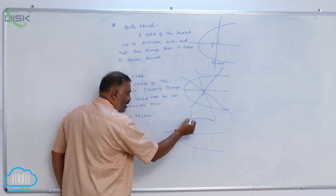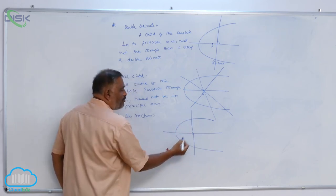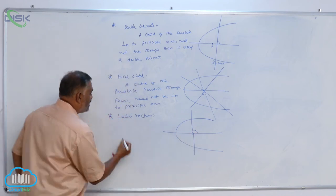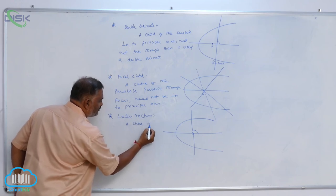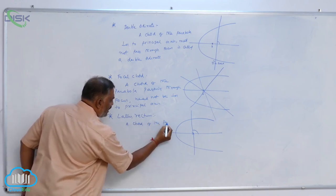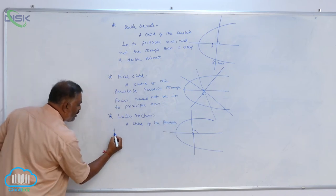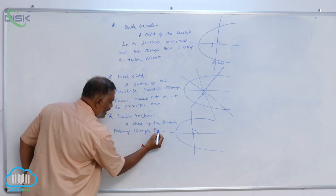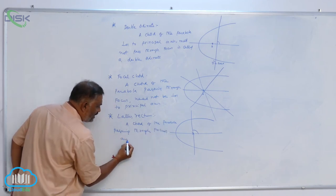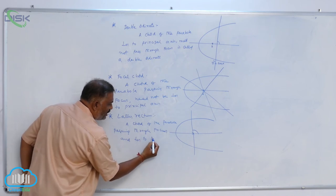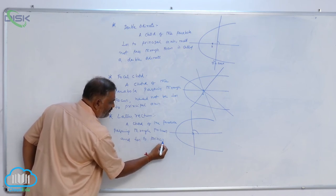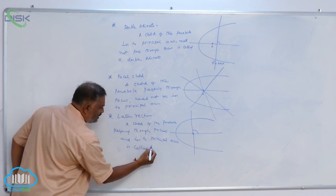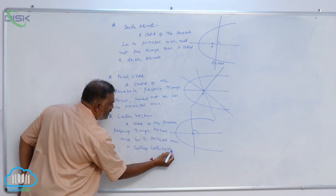Third definition: a chord of the parabola that is both perpendicular to the principal axis and passes through the focus is called the latus rectum.